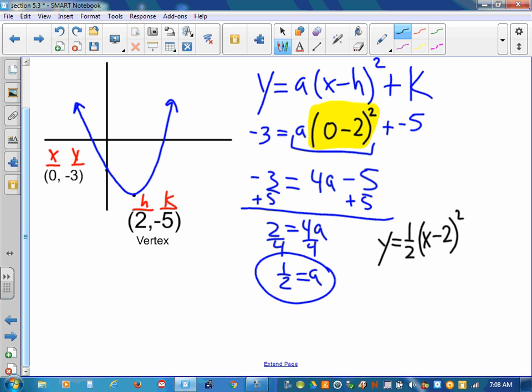And then plus negative five or minus five. So this equation right here models that situation of a vertex of two negative five and an extra point of zero negative three. It can be any point. This one just happens to be the y-intercept.